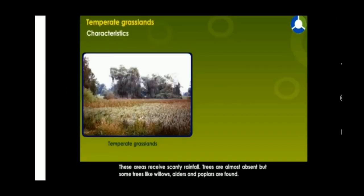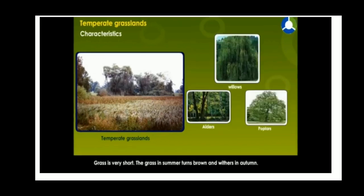Now we will learn about the characteristics of temperate grasslands. These areas receive very scanty rainfall. Trees are almost absent, but some trees like willows, alders and poplars are found. The grass here is very short, and in summer it turns brown and withers in the autumn.